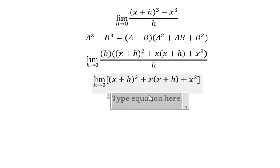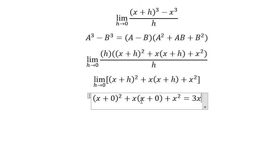Next, we let h approach 0. So you get (x + 0)² + x(x + 0) + x². This gives us 3x².